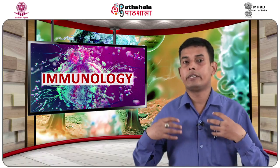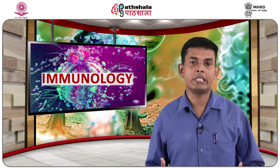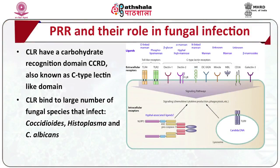C-type lectin receptors (CLR) include soluble and transmembrane proteins. CLR have a carbohydrate recognition domain (CRD), also known as the C-type lectin domain. The name C-type lectin is derived from its requirement for calcium binding, though now there are CLRs that do not require calcium binding. CLR bind to a large number of fungal species that infect humans and other vertebrates, including Aspergillus fumigatus, Coccidioides, Histoplasma, and C. albicans.